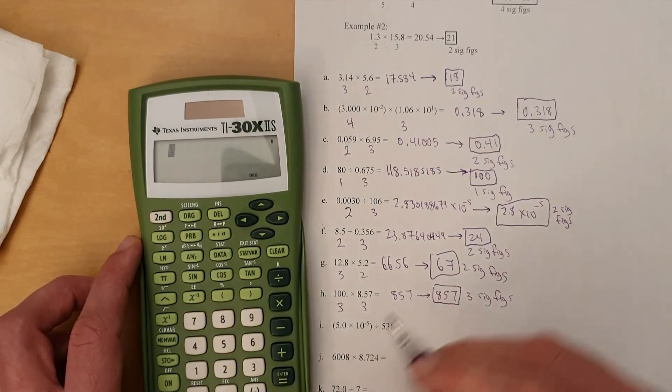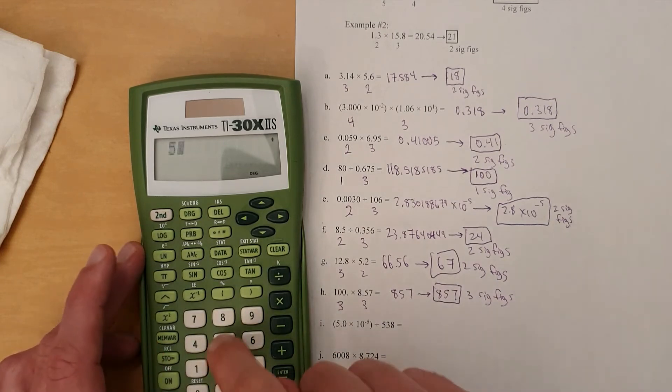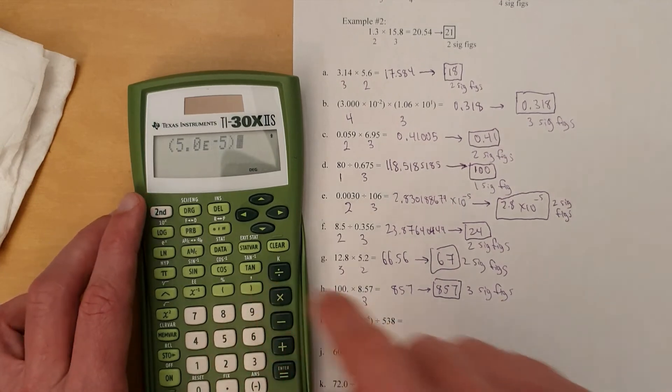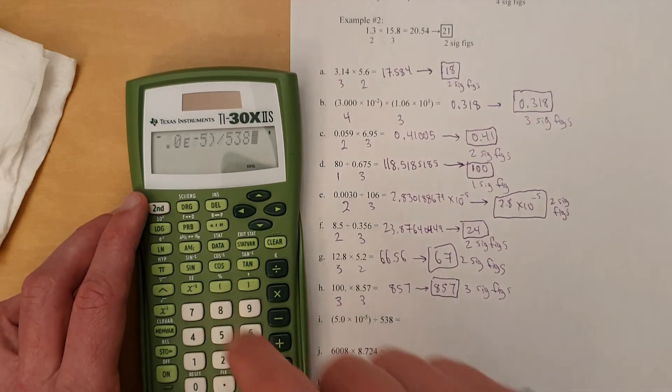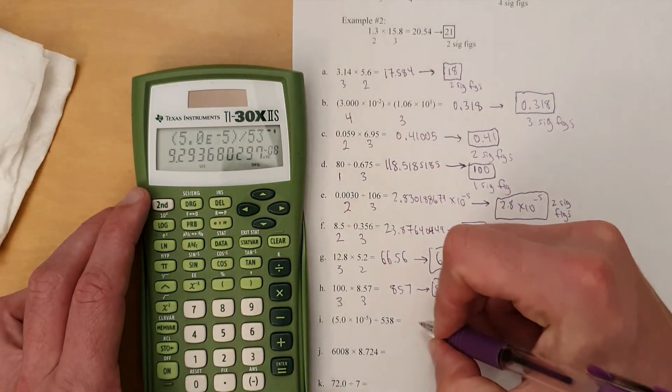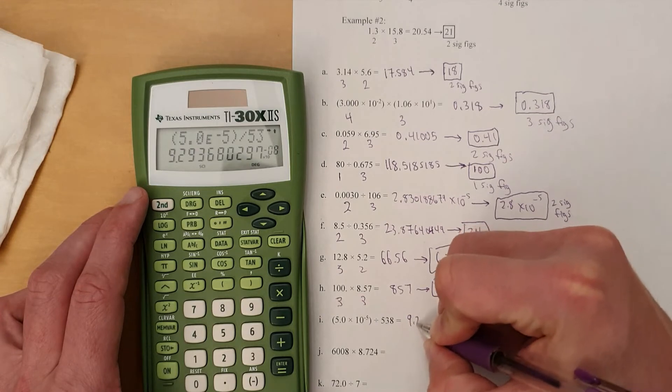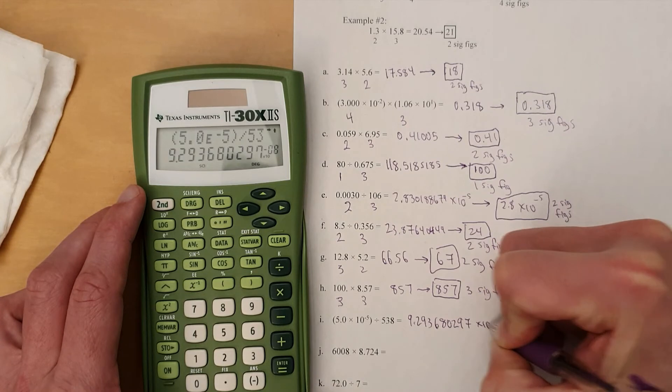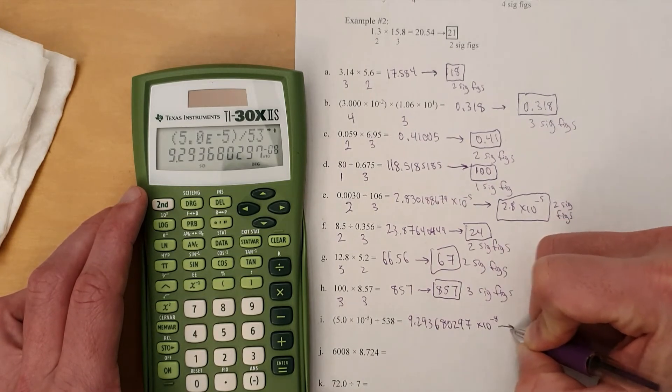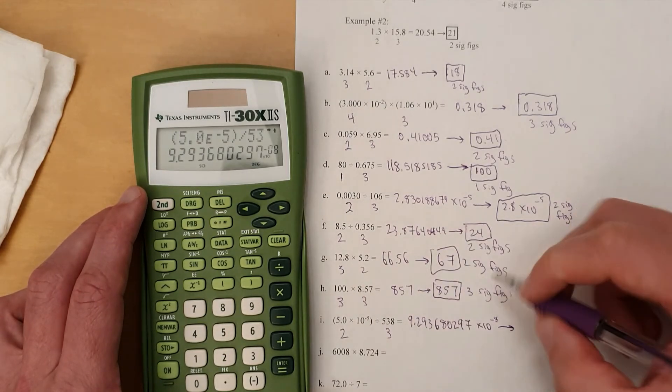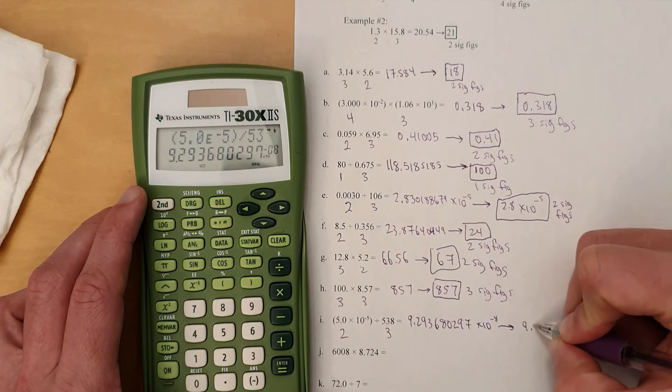All right, let's see. 5.0 times 10 to the negative fifth, close parentheses, divided by 538. And you get that, which we will convert to scientific notation. 9.293680297 times 10 to the negative eighth power, which we will then round to. This is two sig figs. This is three. So we're going to round that one to, let's see, 9.3 times 10 to the negative eighth.